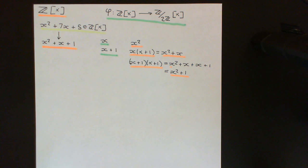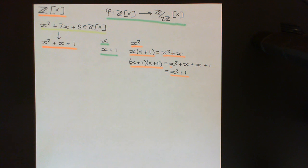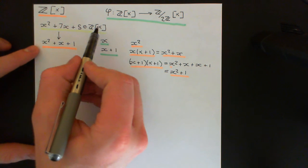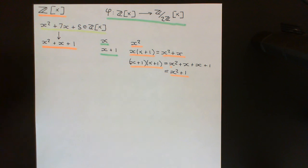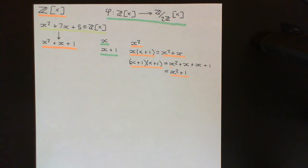By brute force, I have shown it is impossible to write x² + x + 1 as the product of two polynomials of smaller degree in (ℤ/2ℤ)[x]. That was our only hope of factoring it in that ring. Because I failed to do that, I can conclude that x² + 7x + 5 in ℤ[x] is actually irreducible — you cannot write it as a product where both factors are non-units. That's a concrete example of using this theory, and with that we finish our discussion of polynomials modulo an ideal.